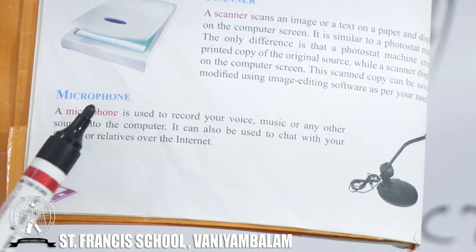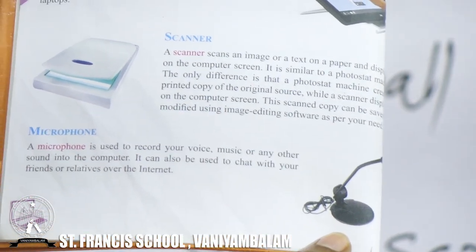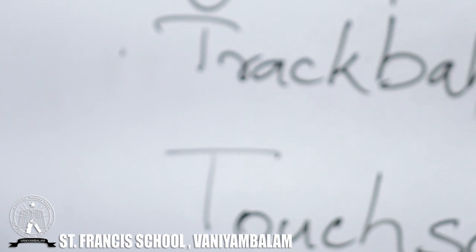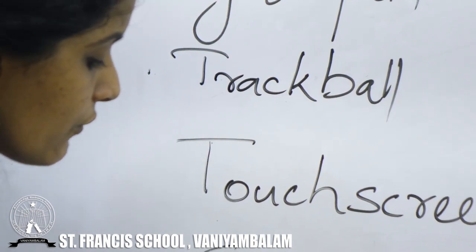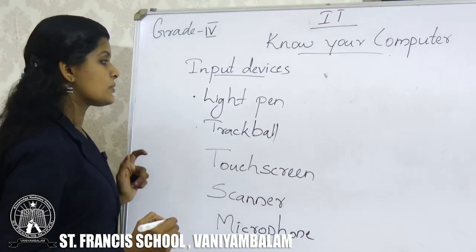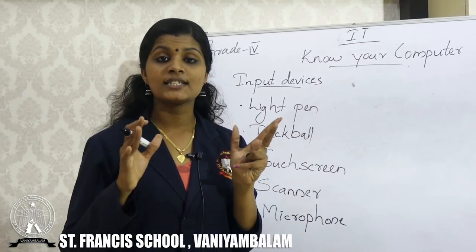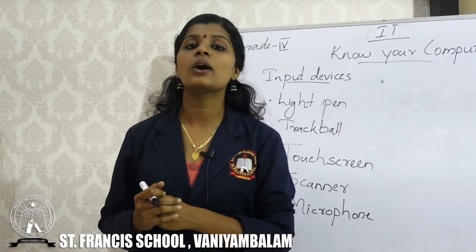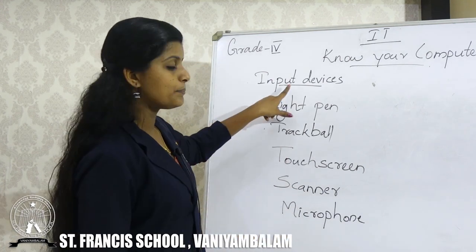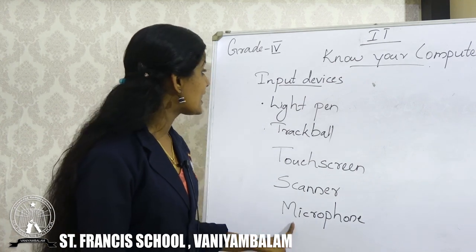The next input device is microphone. Its picture is in the textbook. Microphone is an input device used to record your voice or sound. That is the use of microphone — very simple: it records your voice.